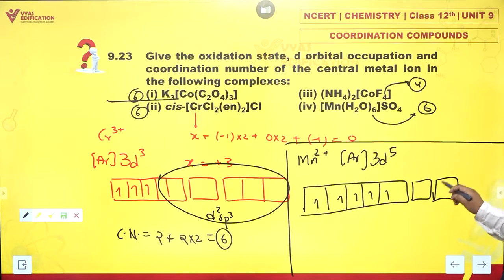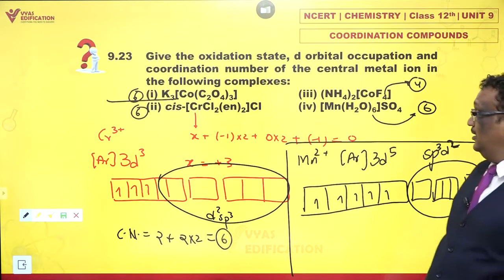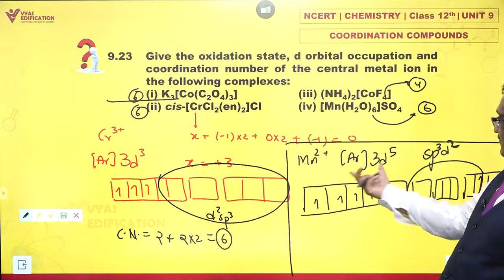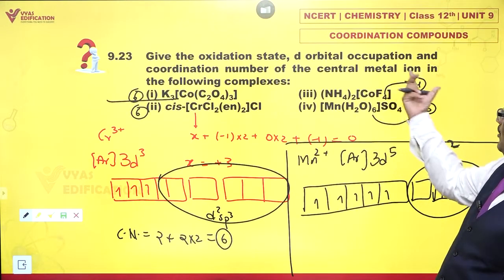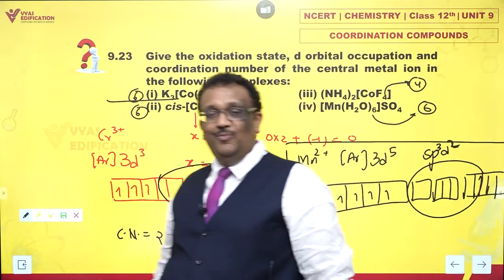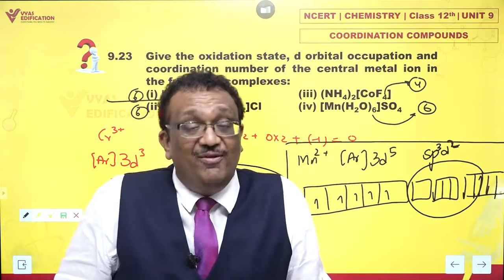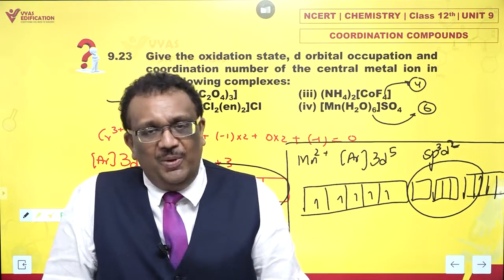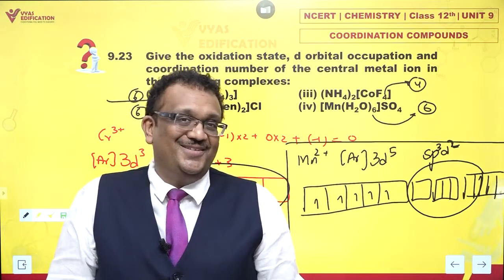What about hybridization? Well, as good as it gets, it is SP3D2. It is obviously a high spin complex. Coordination number is 6. D5. Everything has been told about the d-orbital occupation also. Coordination number and oxidation number. That is a diagram. In addition, we have also told the hybridization, which wasn't really asked. But I thought it may not be a bad idea. Simply to mention that. Done.